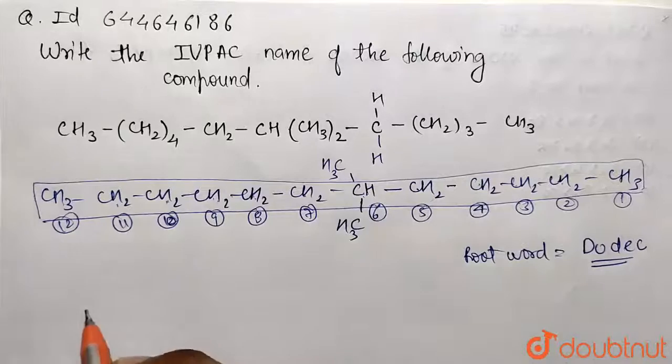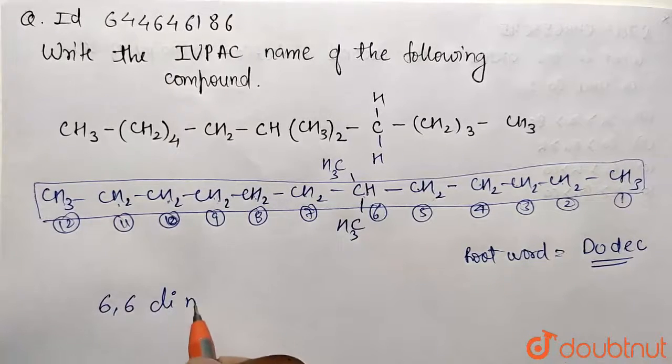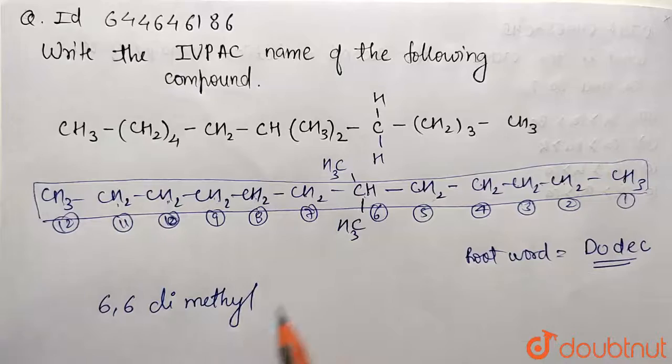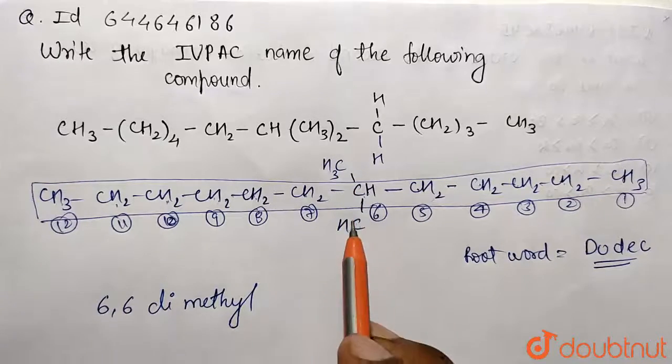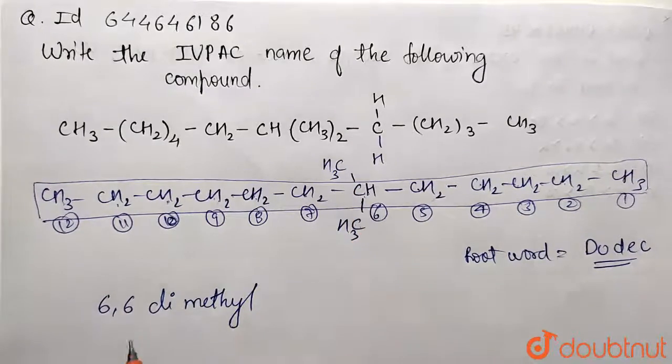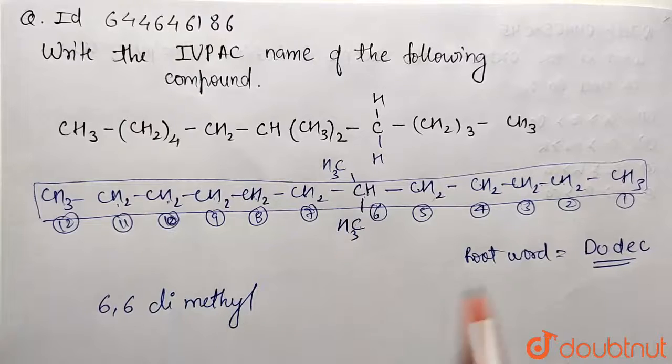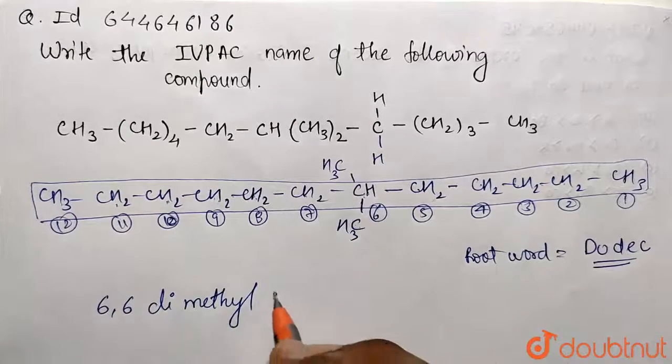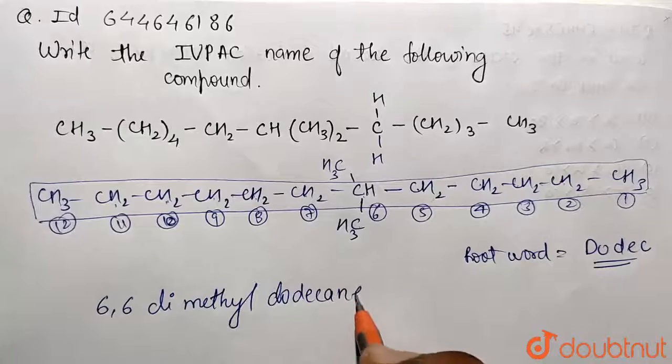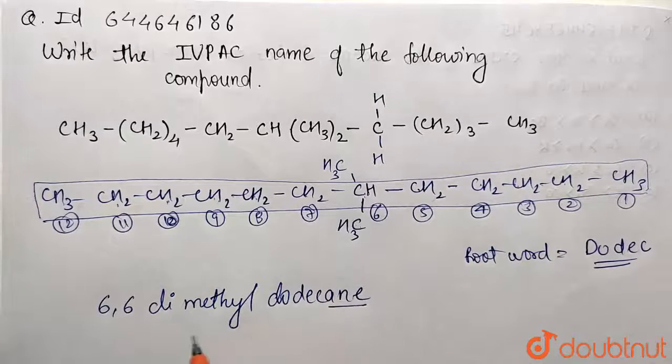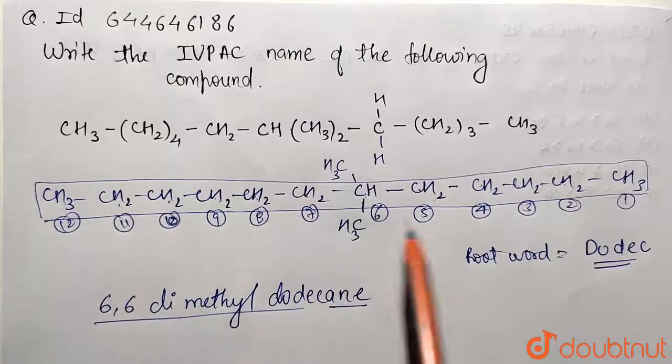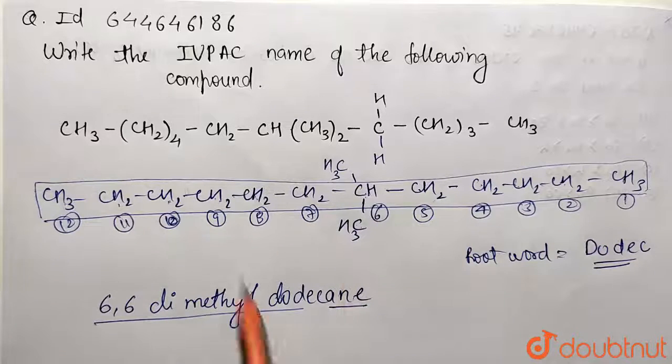We mention the position of the methyl groups: 6,6-dimethyl because there are two methyl groups on the sixth position. The alkane chain is dodecane (D-O-D-E-C-A-N-E) to indicate it's an alkane molecule. This is the full name for the given compound.